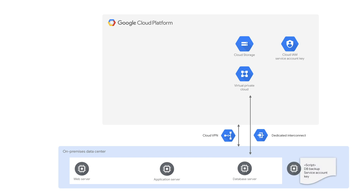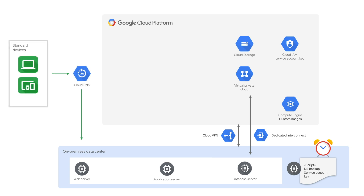Make sure uploads and downloads to and from the cloud storage bucket are working. Then you finally script the data transfer, create a scheduled task to run that script, and then create custom images that are configured for each type of server in the production environment. You configure the DNS to point to your internet-facing web services, and then create a deployment manager template that will create servers in your Google Cloud network using the previously configured custom images.